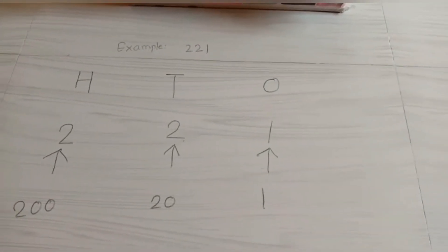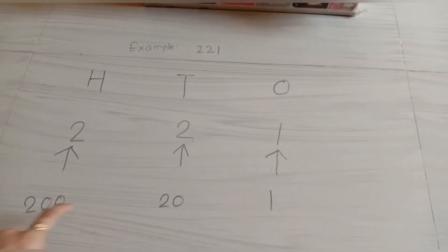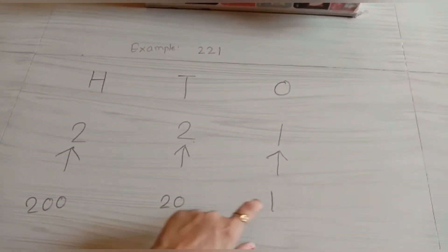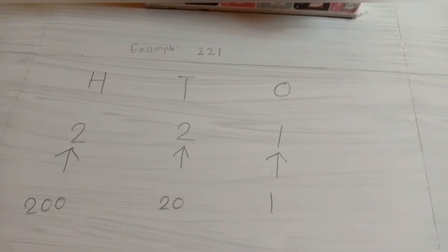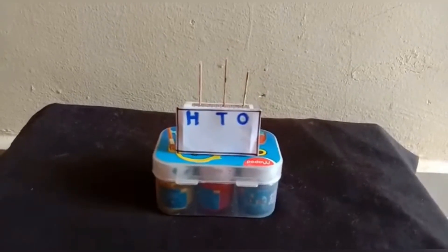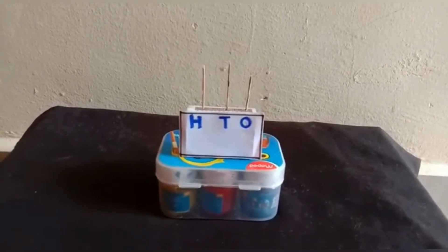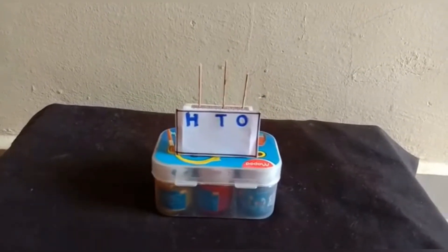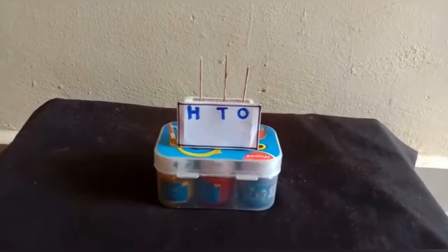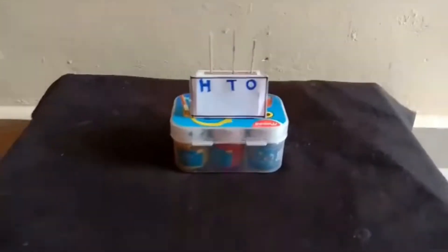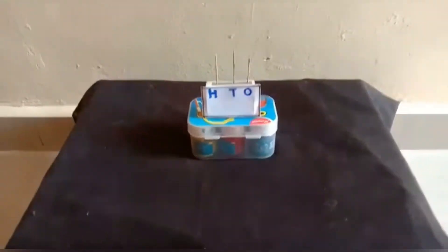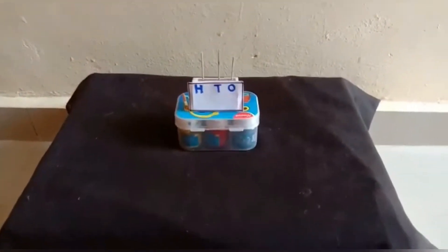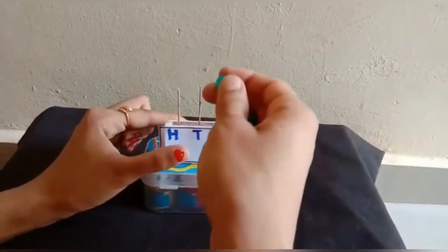So the number is two hundred and twenty one. Let's represent this number on an abacus. First we are going to put beads on the hundreds spike.